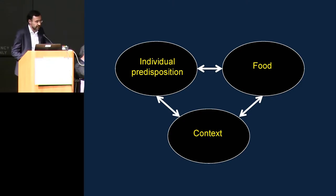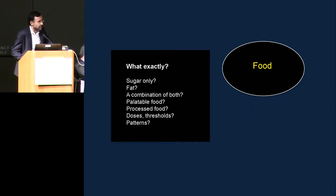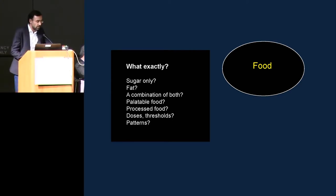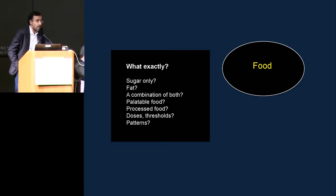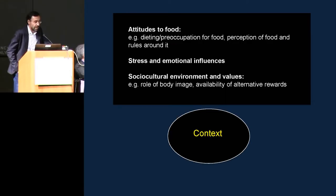Regarding food, we need to know what type has more addictive capacity. Is it sugar only? Fat? A combination of both? Is it palatable or processed food? We need to talk about doses, thresholds, and patterns. But it is also very important to talk about context, which is one of the key forgotten components. Attitudes to food are very important — dieting, preoccupation with food, perception of food, and rules around it.